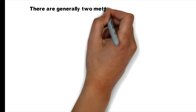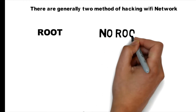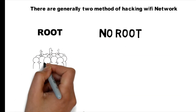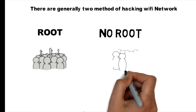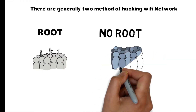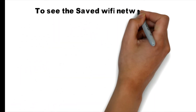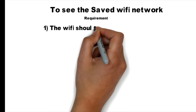There are generally two methods to access Wi-Fi network passwords on Android: rooted and non-rooted. Only a few people root their device, so most Android devices are non-rooted. To see the saved Wi-Fi network password, we need some requirements. First, the Wi-Fi should be connected.